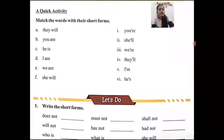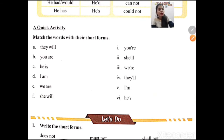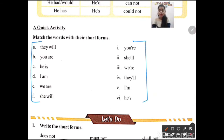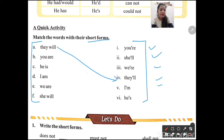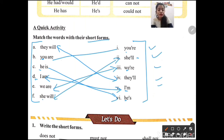Here is a quick matching activity from your book. Match these full forms with their short forms. 'They will' — find 'they'll' in the list. 'You are' → 'you're'. 'He is' → 'he's'. 'I am' → 'I'm'. 'We are' → 'we're'. 'She will' → 'she'll'. The first word in the contraction helps you identify the match easily.